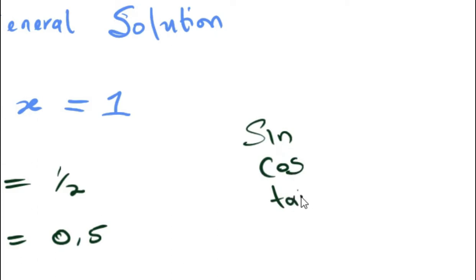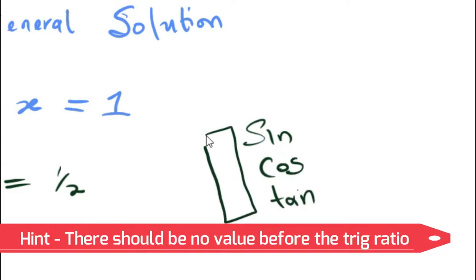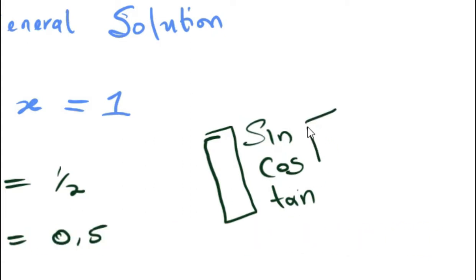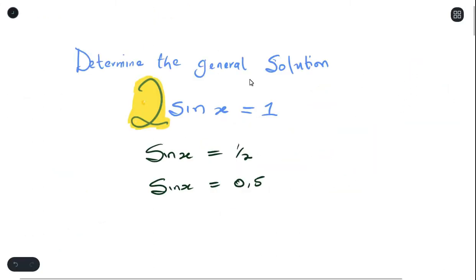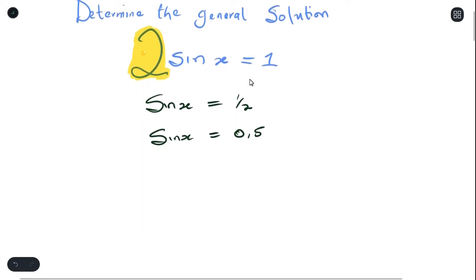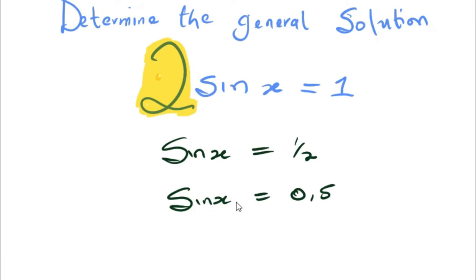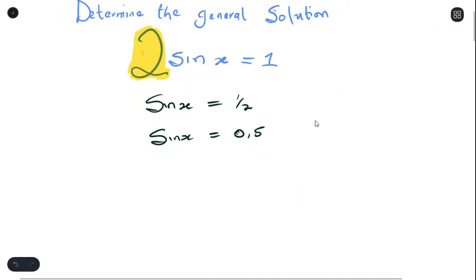Whether you're working with sine, cos, or tan, make sure there is no value attached behind them — values in front are fine. It should always equal something. The next step is to determine if your answer is positive or negative. Here, sinx = 0.5, so the answer is positive.